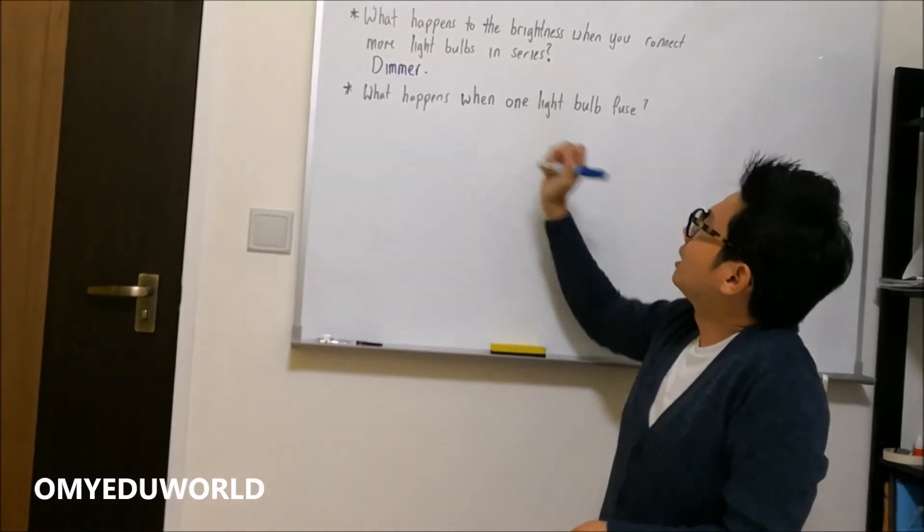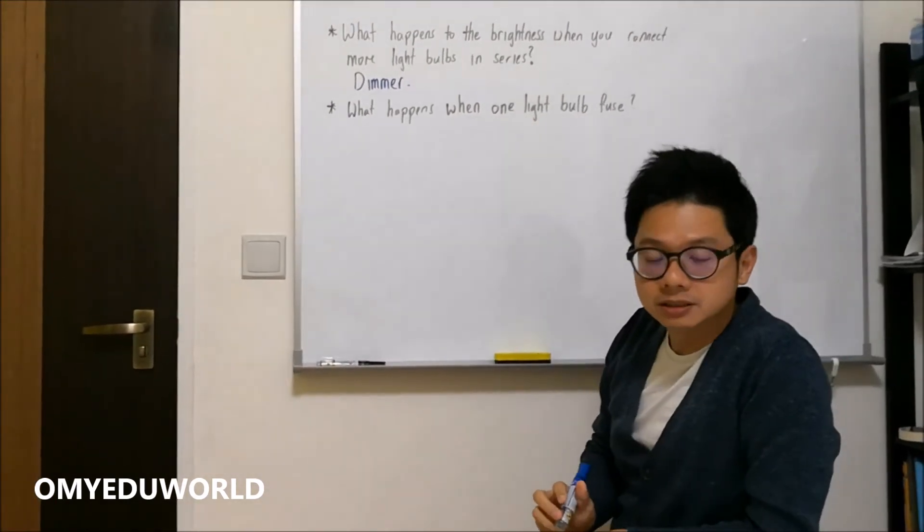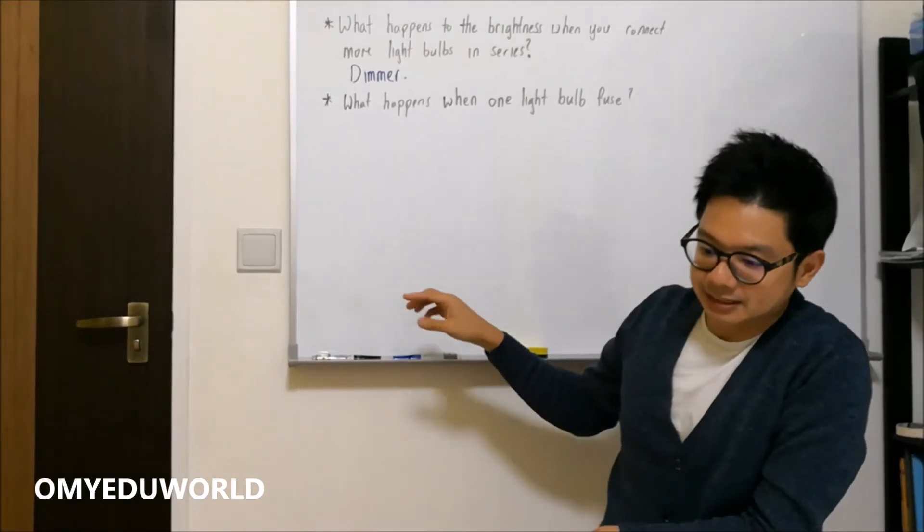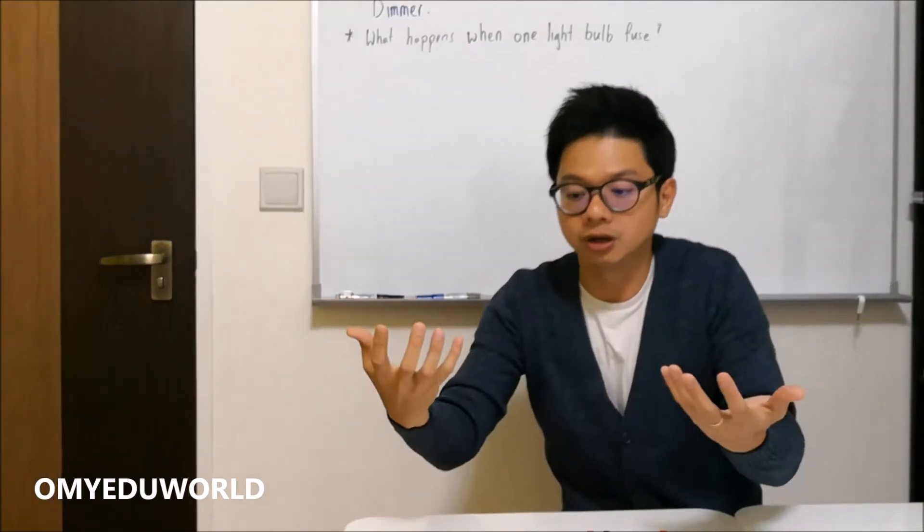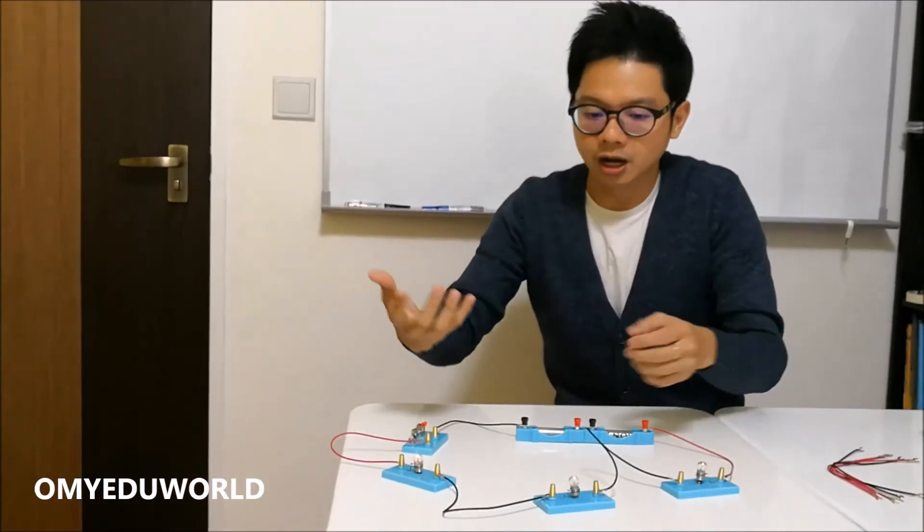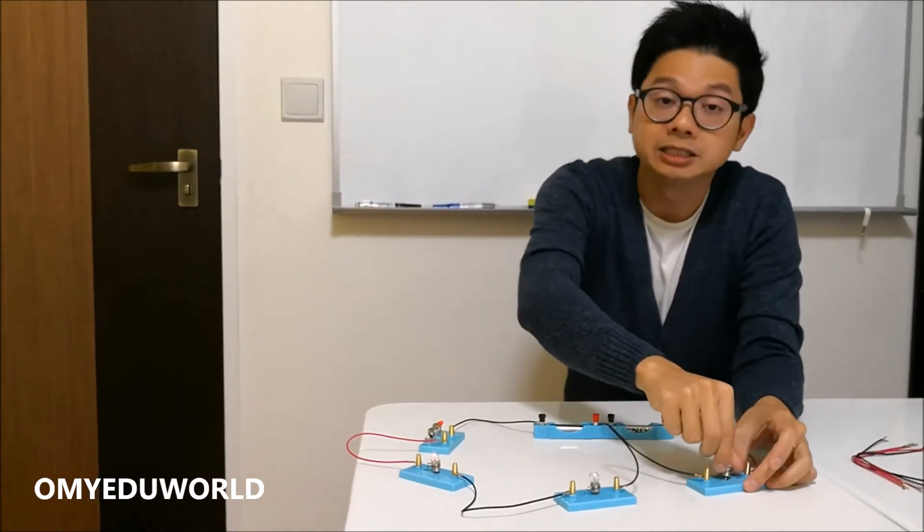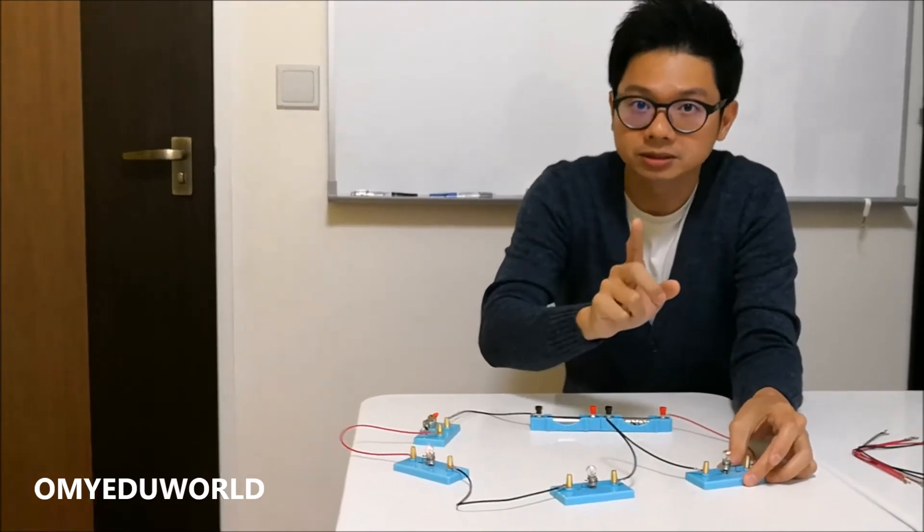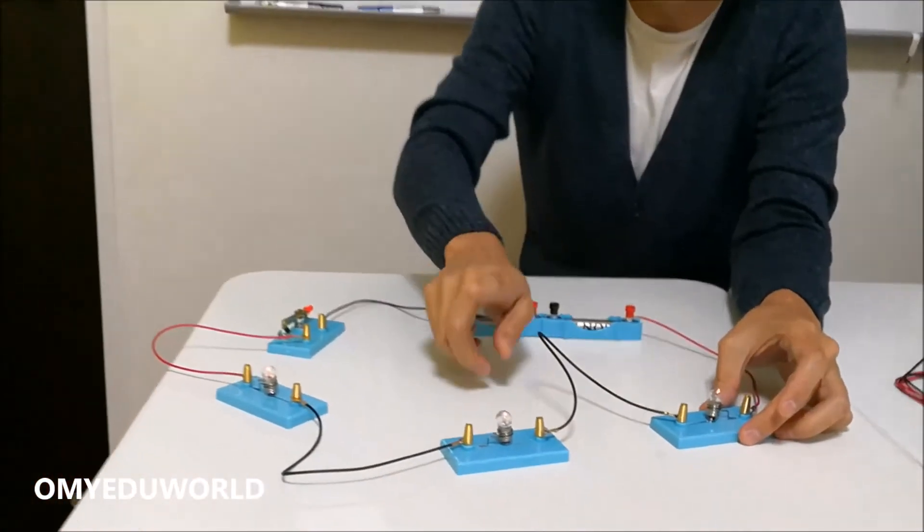What happens when one light bulb fails? So fails means that it is blown or it is spoiled. So how do I simulate this? I'm going to unscrew one light bulb. So look at this.